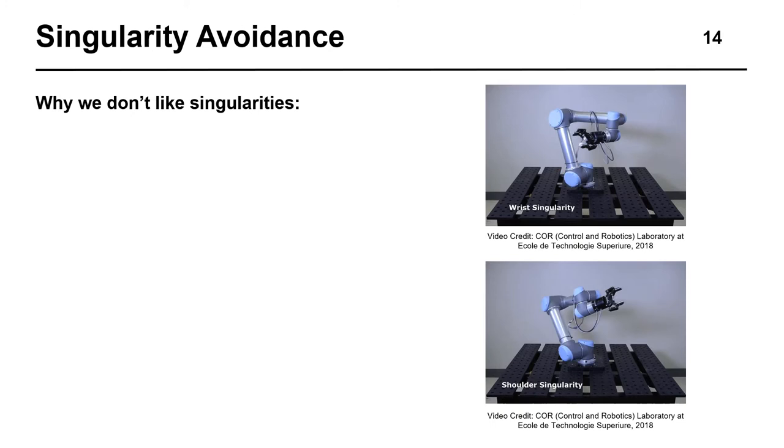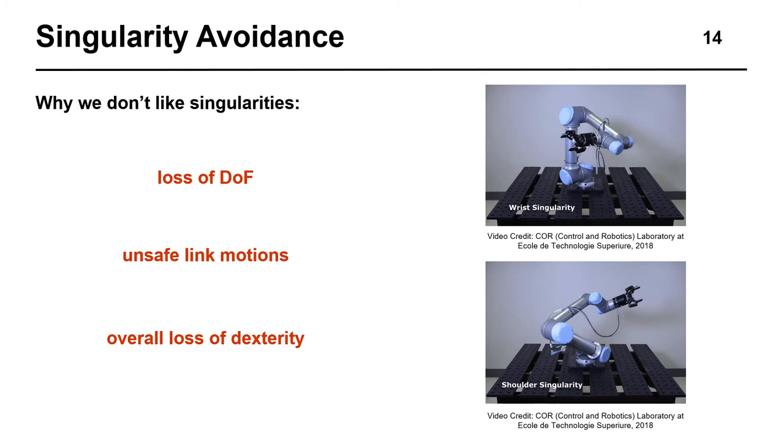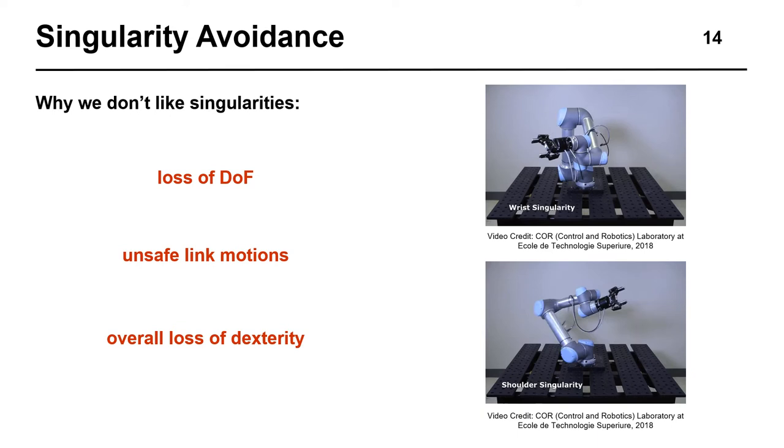Clearly, we don't like singularities because they generate rapid and unsafe movement of the robot's links. At a singular configuration, the robot completely loses a degree of freedom, while even proximity to singularities results in the robot requiring large joint movements in order to perform relatively small motions with the end effector. Overall, this results in the loss of dexterity, which is highly undesirable in most applications.